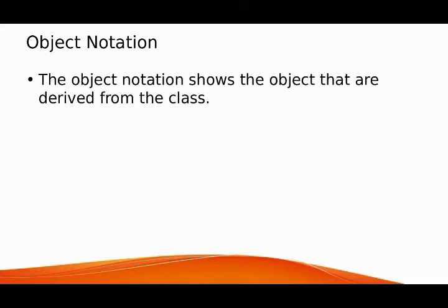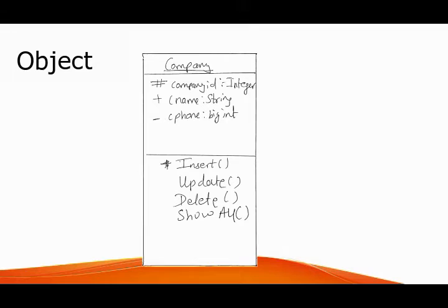Object notation shows the objects derived from the class, as you learned in object-oriented programming. It is very similar to the class notation — the only difference is that the name is underlined. So 'Company' is underlined as the object name. The attributes are company ID, company name, and company phone with types integer, string, and big integer, and the operations are insert, update, delete, and show.